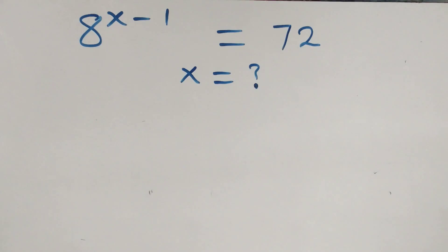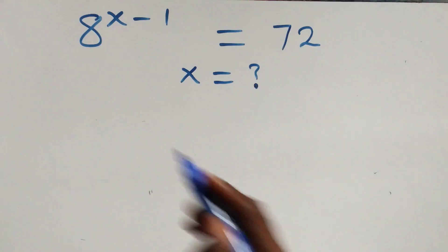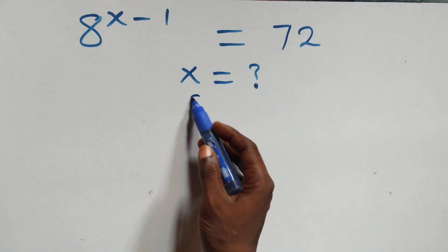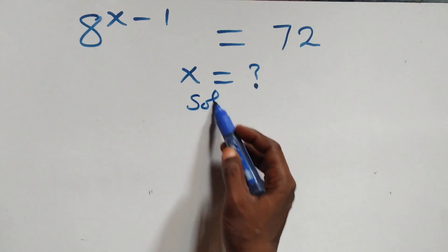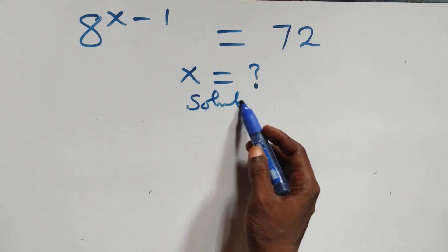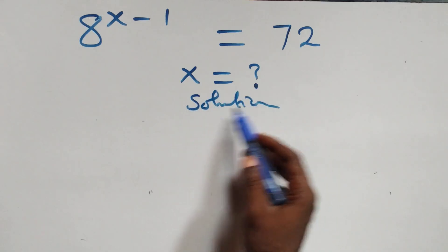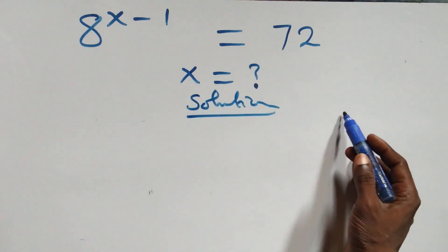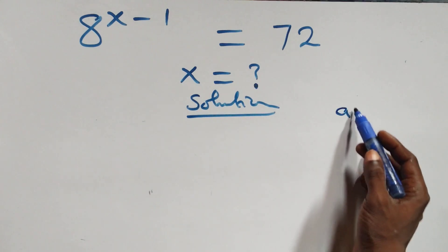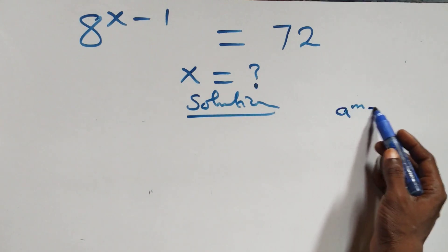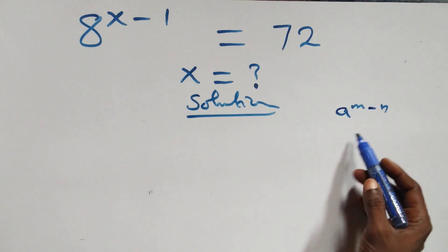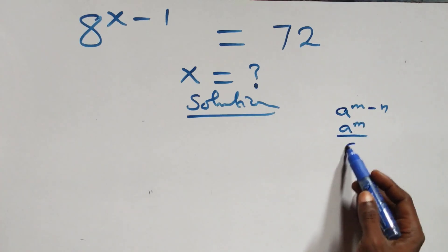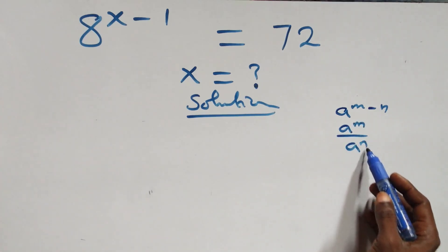Hello, you are welcome to solve this nice exponential equation. What we have here is: when we have a raised to power n minus n, this is the same thing as a raised to power n over a raised to power n.